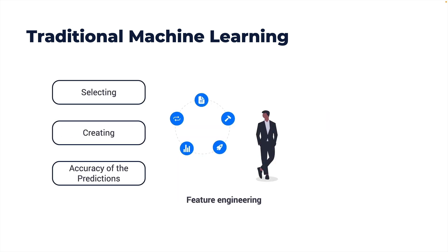One of the key requirements of traditional machine learning is feature engineering, which involves selecting and creating the most relevant input variables that influence the learning ability of a model and thus the accuracy of predictions. For example, in a typical model that predicts the price of a house, the features would include variables like the location, the size of the house, and the age of the house. These parameters that influence the learnability of the model are called features. So traditional machine learning is heavily dependent on feature engineering.